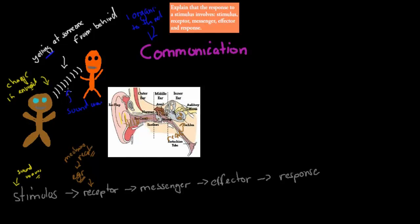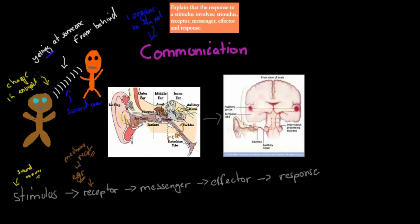So we have the stimulus being the sound wave, picked up by receptors in the ear. The next part is the messengers. We have messenger neurons — you can see the auditory nerve here. Once the receptors pick up that change, the message gets sent all the way to the brain for interpretation. The brain is the control center, and the actual neurons — the nerves — that connect the ear to the brain are the messengers.